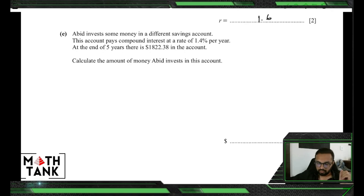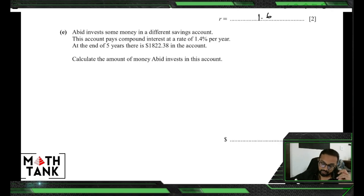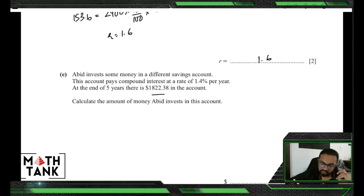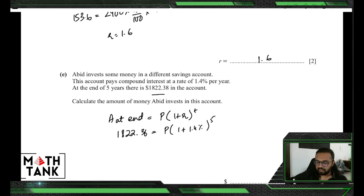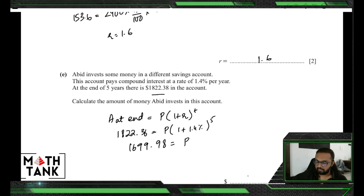Always invests money in a different savings account paying compound interest. At the end of five years there is $1,822.38 in the account. Calculate the amount originally invested. Using the compound interest formula: Amount = P(1 + r)^t. So 1,822.38 equals P into (1.014)^5. Dividing: P equals 1,822.38 divided by (1.014)^5, giving approximately $1,699.98, which means the original investment was $1,700.